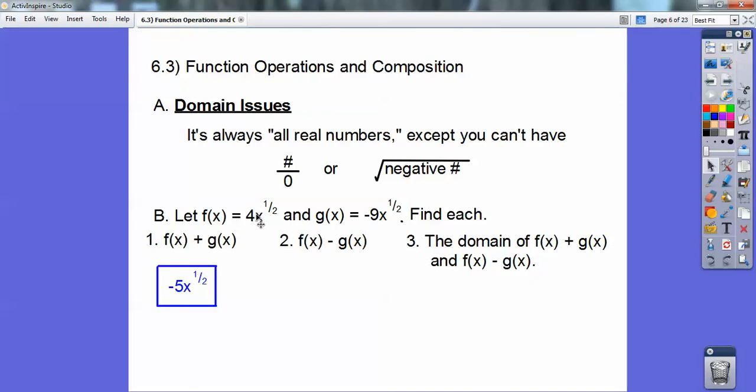Here you're going to subtract them. And again, since they have the same exponents, you just subtract the leading coefficients. 4 minus a minus 9 becomes 4 plus 9. So you get 13x to the 1 half.